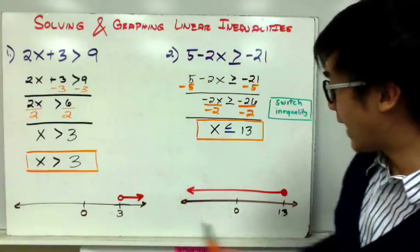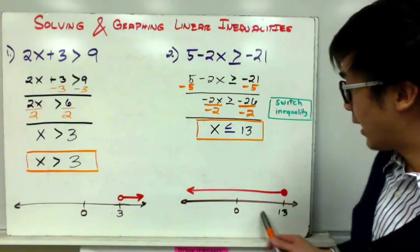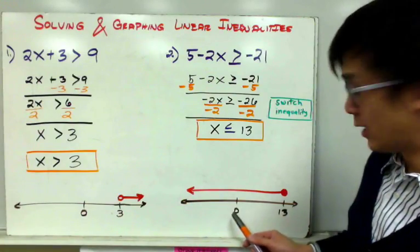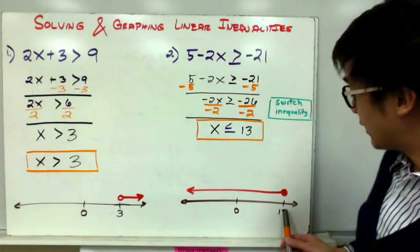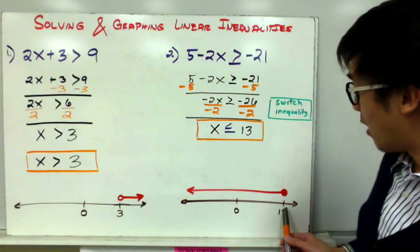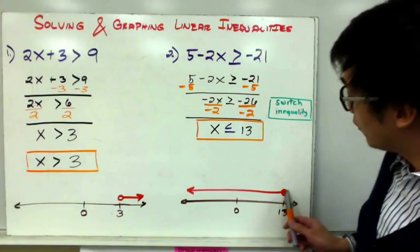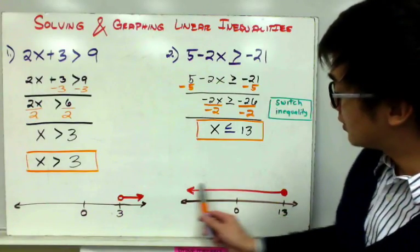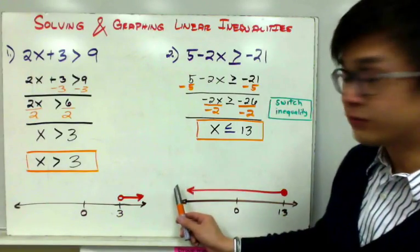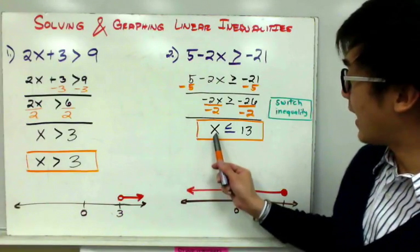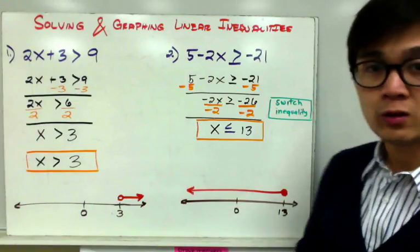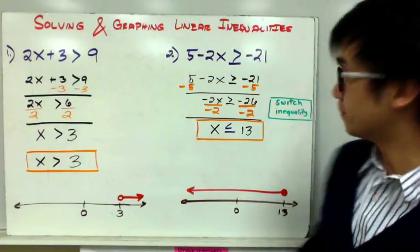To graph x less than or equal to 13, this is your graph: your number line with 0, and 13 on the positive side, with the shading moving towards the left because it's x less than or equal to 13.